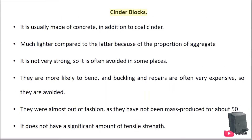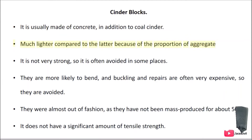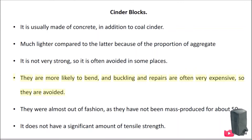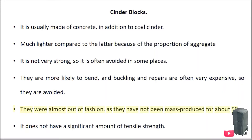Cinder blocks are usually made of concrete in addition to coal cinder, making them much lighter compared to concrete blocks because of the proportion of aggregate. They are not very strong, so they are often avoided in some places. They are more likely to bend and buckle, and repairs are often very expensive, so they are avoided. They were almost out of fashion, as they have not been mass-produced for about 50 years. They do not have a significant amount of tensile strength.